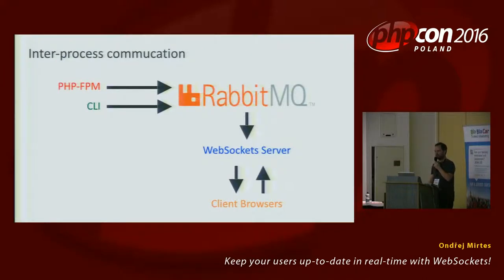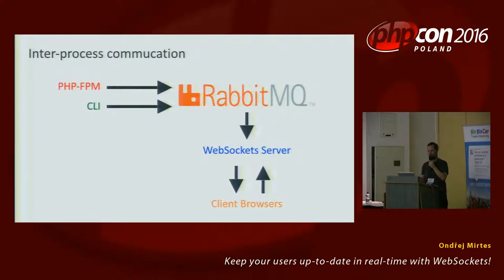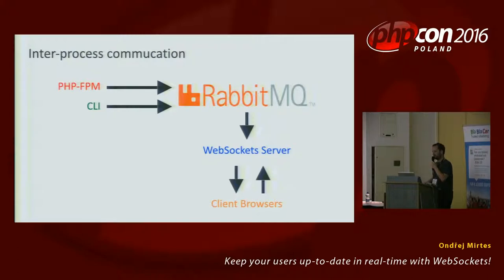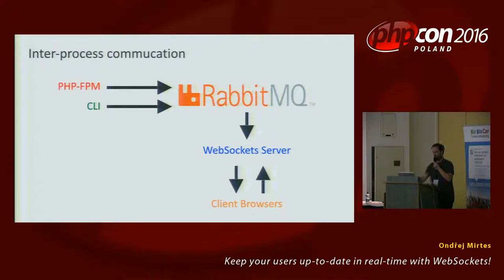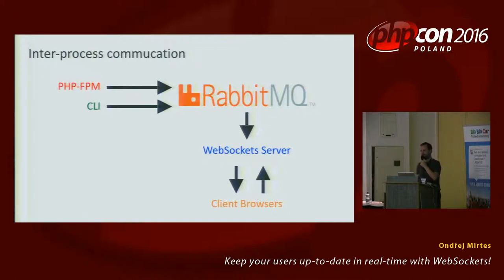When something happens in your classic web application and you need to notify WebSocket clients about it, you need some communication between the WebSocket process and your web server — your PHP-FPM. I like to use message queues for that, such as RabbitMQ or ZeroMQ, which provide inter-process communication between server processes. For example, when your Symfony controller is called and needs to notify WebSocket clients, you send a message to RabbitMQ, which forwards it to the WebSocket server, which then sends it to the clients.